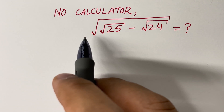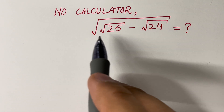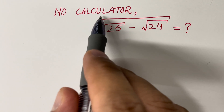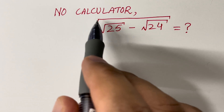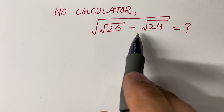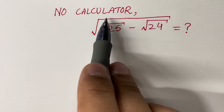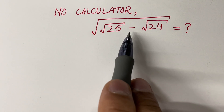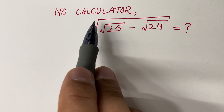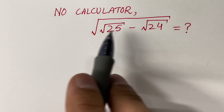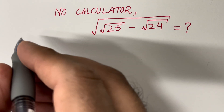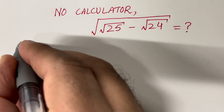Hi everyone! We have a very interesting problem where we are not allowed to use a calculator. We have a bunch of square roots, but we can simplify this problem without using a calculator. This is a very interesting problem, so let's solve it.